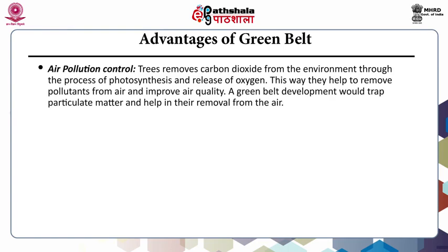The first advantage of greenbelt is the control of air pollution. Trees remove carbon dioxide from the environment via the process of photosynthesis and the release of oxygen. This way, they help to remove pollutants from air and improve the air quality. A greenbelt development would trap particulate matter and will help in their removal from the air.